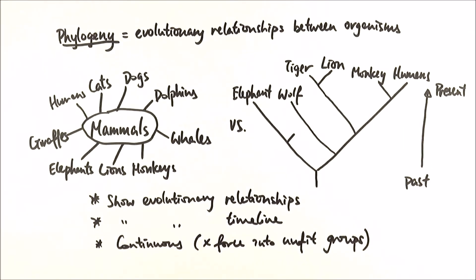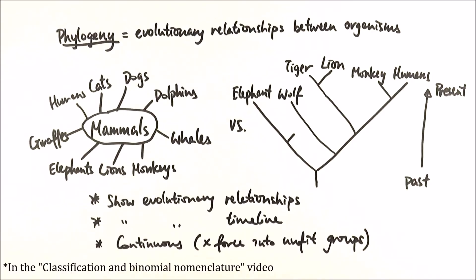So we talked about phylogeny and phylogenetic trees, why they are useful, and also the Linnaean classification — how to remember it, the binomial nomenclature, how to write it, and the reasons for them. Please make sure you know why we need them because they are often two-mark questions in an exam, and they are easy marks — make sure you don't lose them.